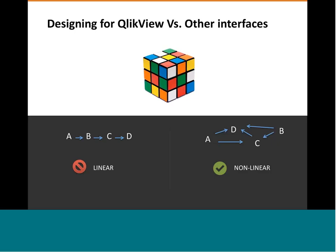QlikView is a very unique tool — I consider it a Rubik's cube. When you choose a data point, the software dynamically adjusts everything and shows you data associated with that selection. It's a very non-linear pattern, unlike other applications where the drill-down is linear from A to B to C. As designers, we need to take this into consideration and bring out that dynamic power in our designs.